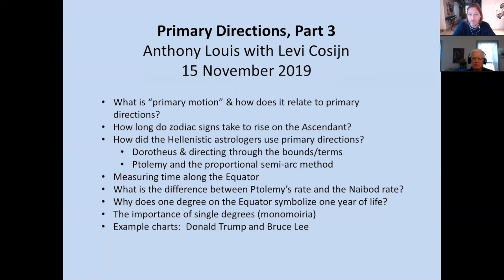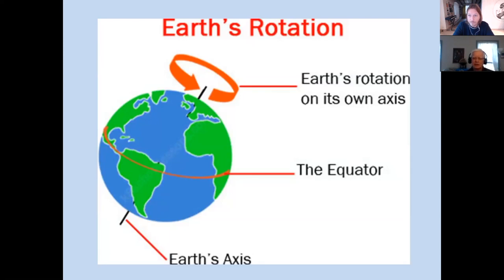We want to keep this to about an hour, so I may go a little rapidly, but the slides will be here that people can refer to, and if need be can listen again, because it's not always obvious on the first exposure. We begin by talking about the rotation of the Earth. The Earth rotates on its axis from west to east, so that the sky appears to rise in the east and set in the west. This is called the primary motion of the Earth, or of the heavens, because the heavens appear to rise in the east, culminate in the midheaven, and set in the west as the Earth rotates once a day. As the planets or points of the chart are carried by the rotation of the Earth to the locations of other planets or points in the natal chart, those are called the primary directions.